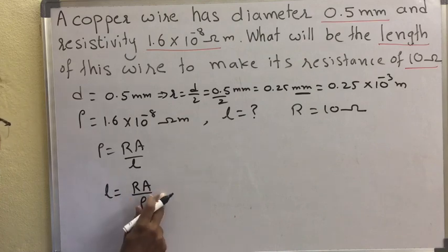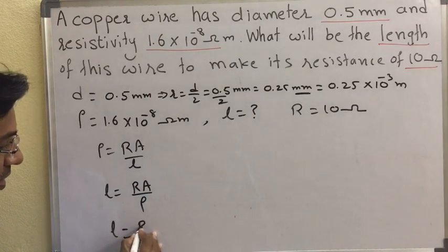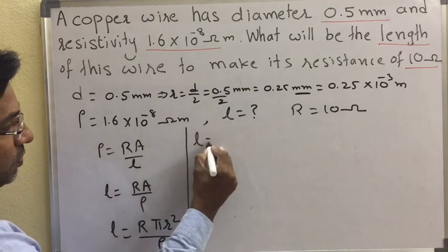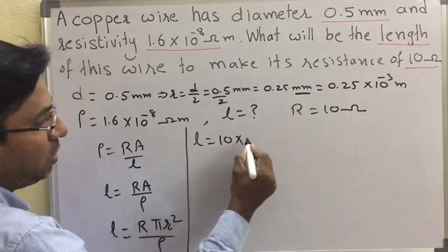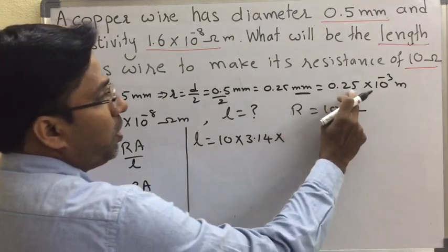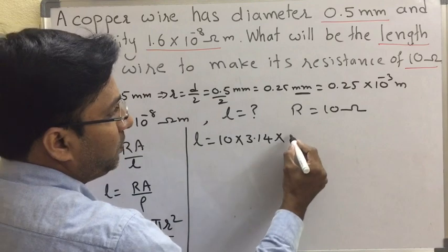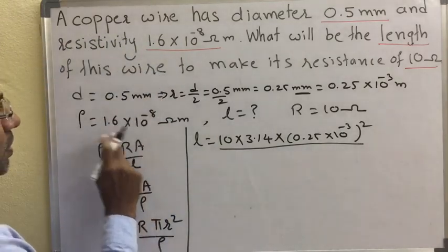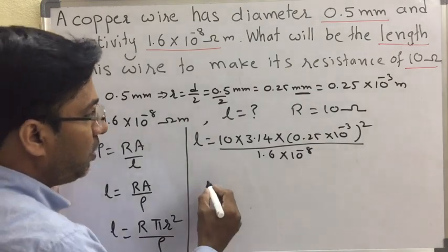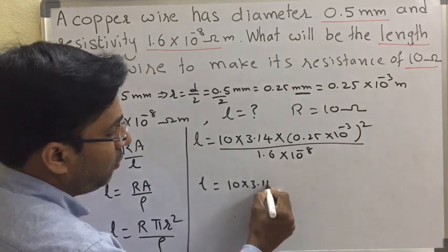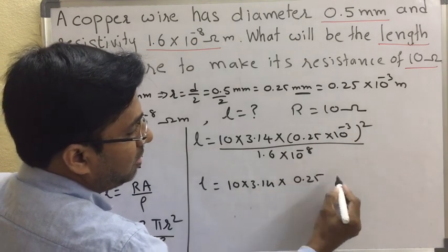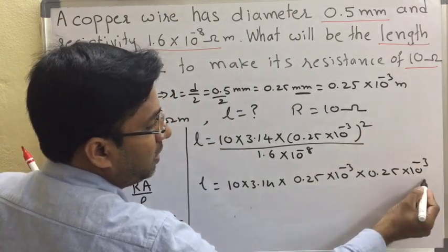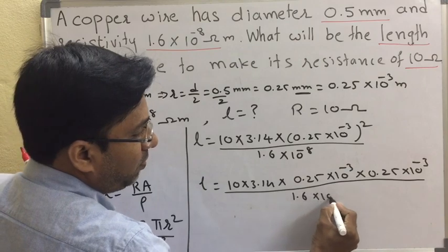Substituting A equal to pi r square, we get L equal to R into pi r square divided by rho. Substituting values: L equal to 10 into 3.14 into 0.25 into 10 power of minus 3 whole square, divided by 1.6 into 10 power of minus 8. Writing the square as two terms: 0.25 into 10 power of minus 3 into 0.25 into 10 power of minus 3, divided by 1.6 into 10 power of minus 8.